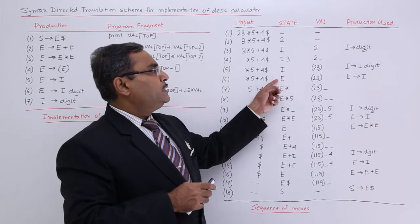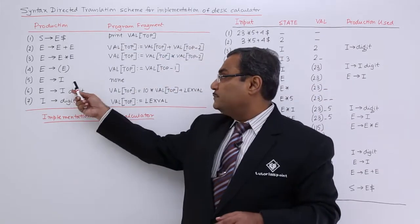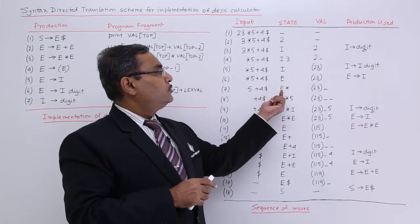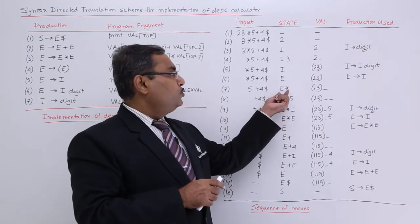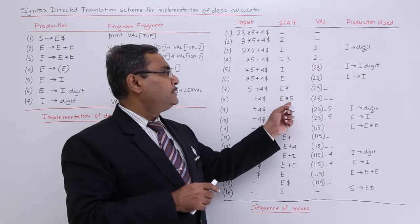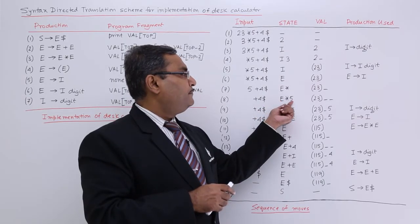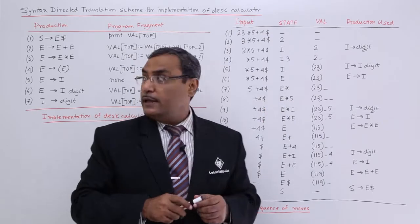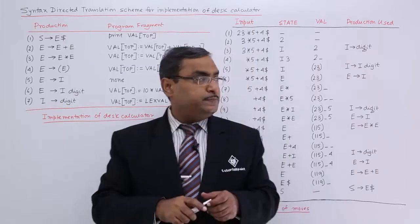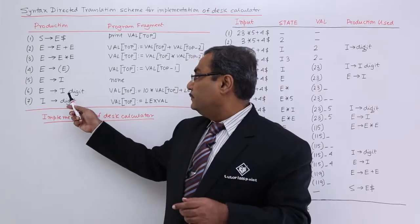Next, I is getting replaced by E because of the production E produces I, so the production is used and there is no semantic action applied. Then star has been considered, so we have E star — 2 lengths, 2 locations at val[top] and val[top minus 1]. Then 5 arrives giving 3 things, 3 locations. We have E star 5; since nothing matches directly, E must match 5 first, so 5 gets replaced by I using I produces digit.